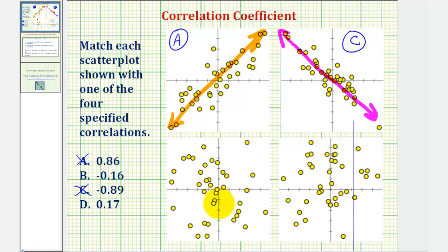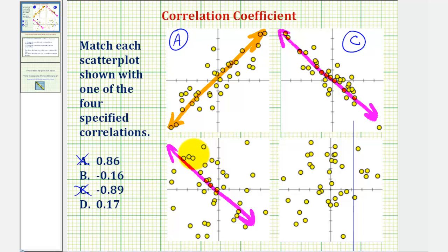Now looking at the remaining two scatterplots, the data is more scattered, which means the correlation coefficient would be closer to zero. Let's sketch a line to represent the data. For this third scatterplot, the trend does seem to be decreasing as x increases, so the linear equation might have a negative slope. Because the data tends to be decreasing but is quite scattered, the correlation coefficient would be negative but close to zero. The best choice is B, negative 0.16.